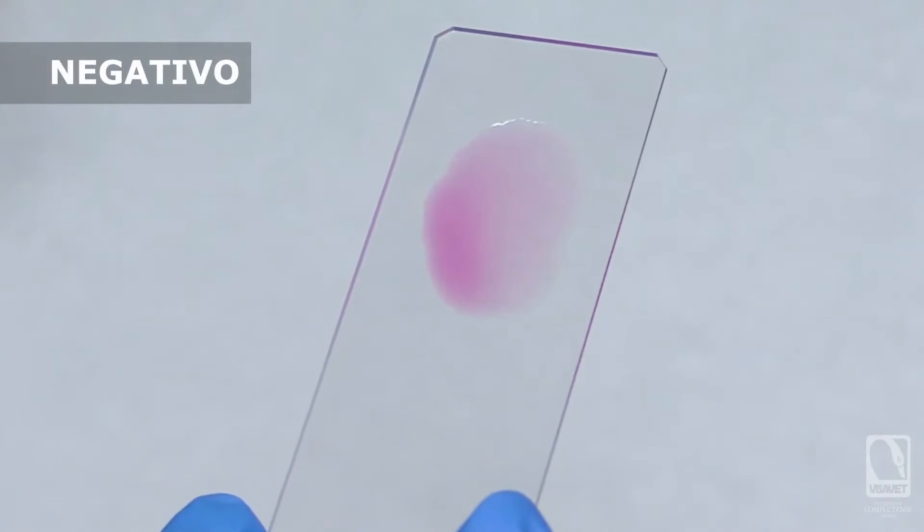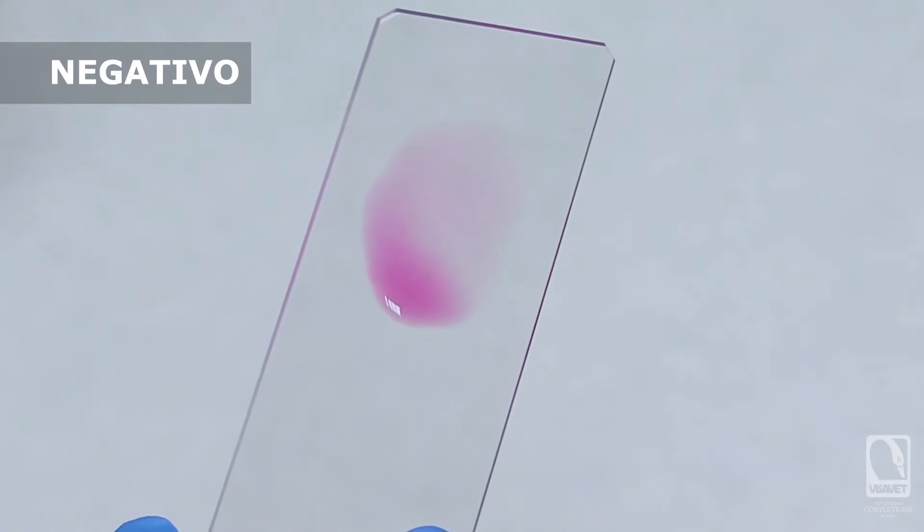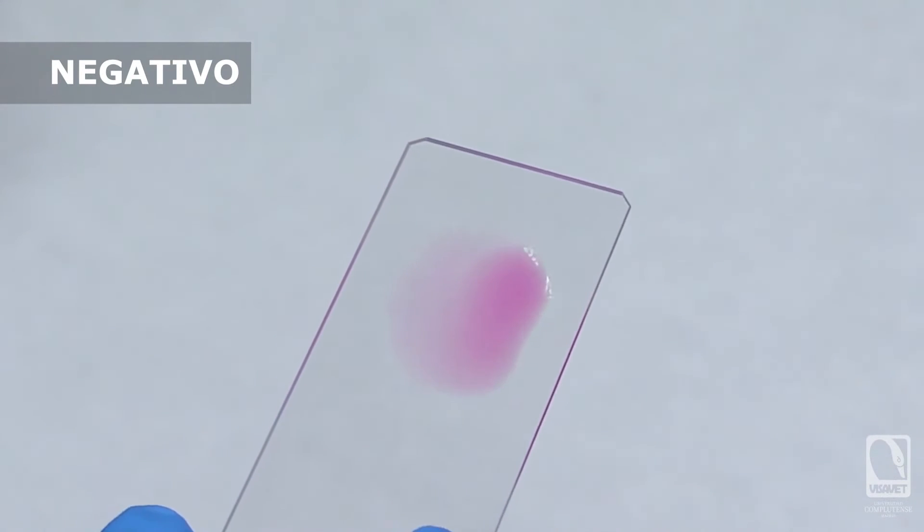If the test sample is negative, we will see on the whole surface of the sample a homogeneous pink color, without any formation of complexes or lumps.